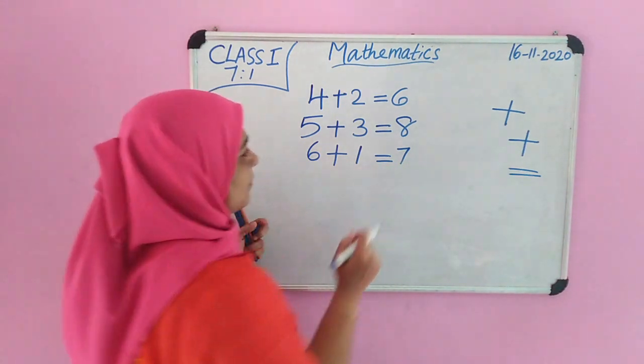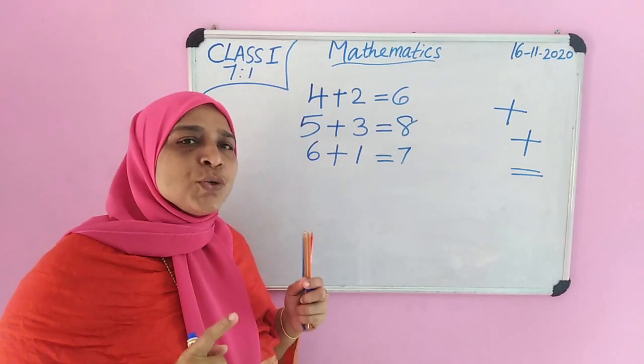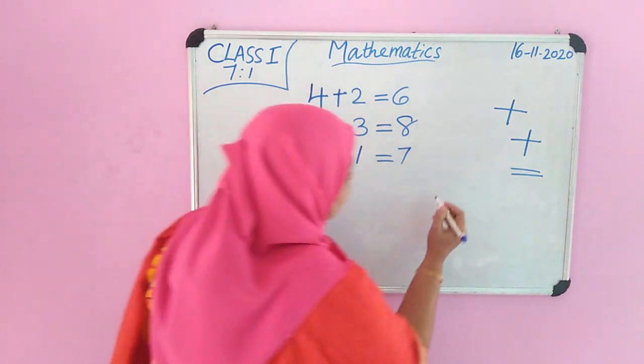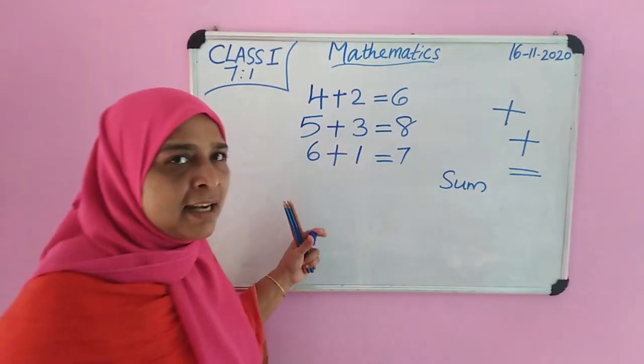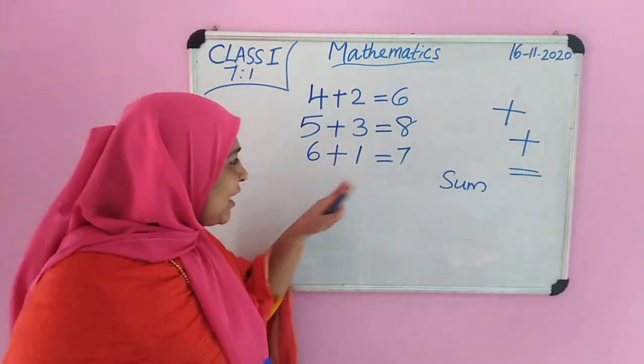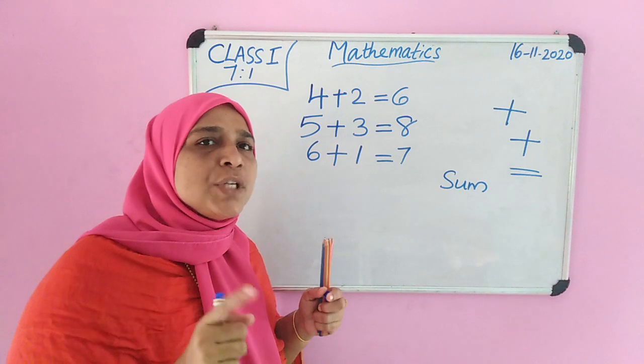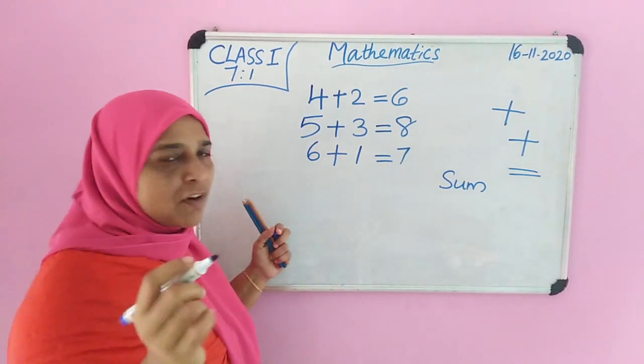The answer we get after adding 2 numbers is called the sum. Again, the answer we get after adding 2 numbers is called the sum. One more example.